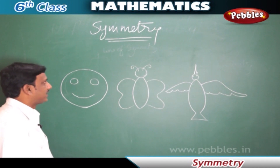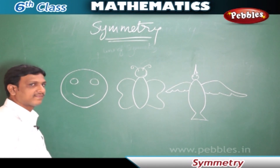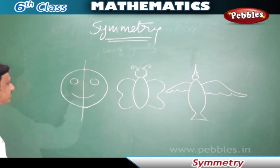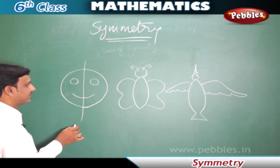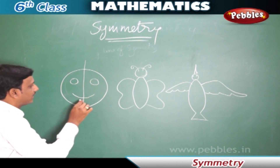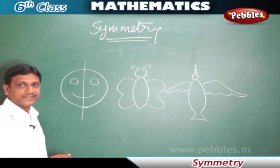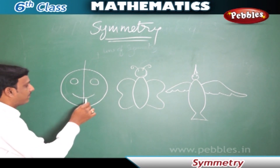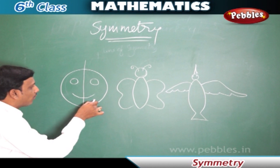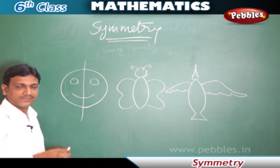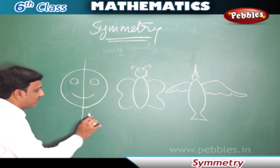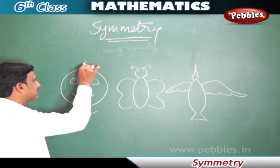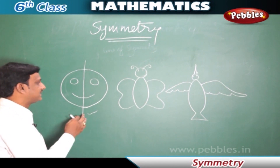Now let us understand line of symmetry better with these examples. Here we have three figures. Let us see this face — if we draw a vertical line dividing this figure into two parts, both parts are equally identical. If this is a paper and we fold it, both parts coincide with each other and match exactly. So we say this figure has symmetry. This line is called the line of symmetry or axis of symmetry.